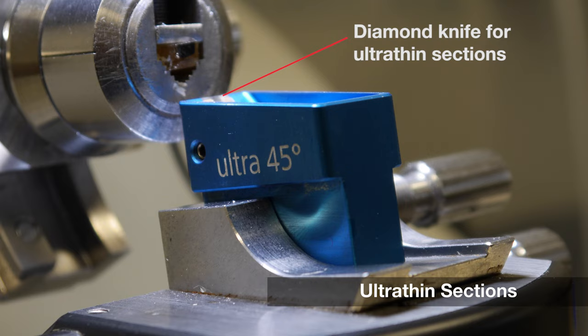The glass knife is replaced with a diamond knife that makes cutting the ultrathin sections easier. The water bath is filled with water and the ultrathin sections float off as they leave the knife edge.